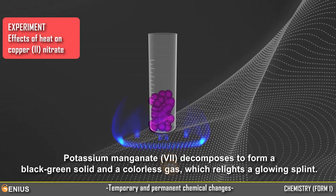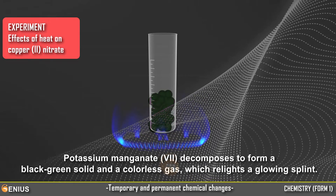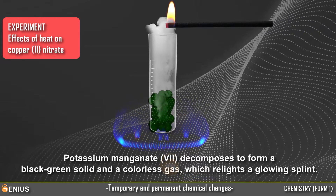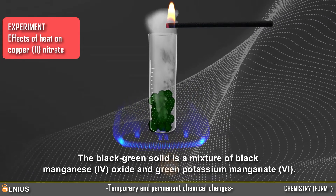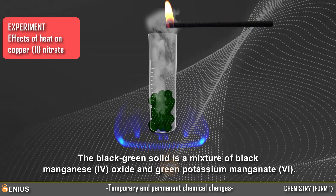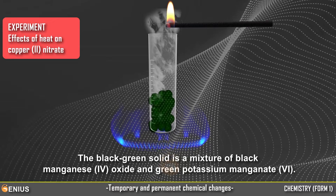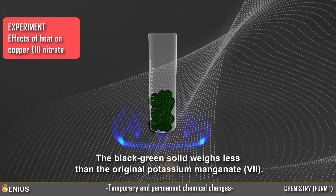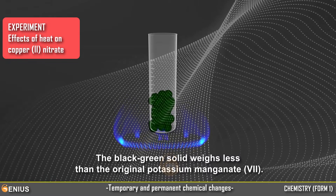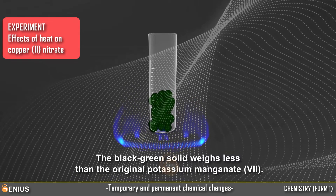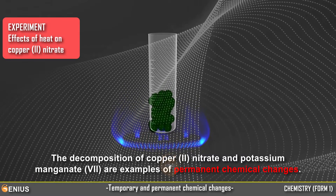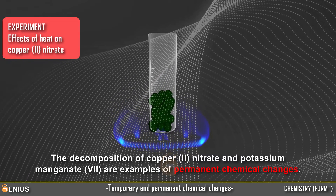Potassium manganate-7 decomposes to form a black-green solid and a colorless gas which relights a glowing splint. The black-green solid is a mixture of black manganese oxide and green potassium manganate-6. The black-green solid weighs less than the original potassium manganate-7. The decomposition of copper-2-nitrate and potassium manganate-7 are examples of permanent chemical changes.